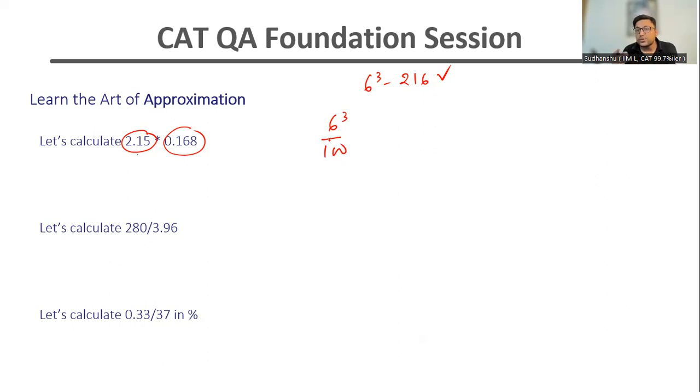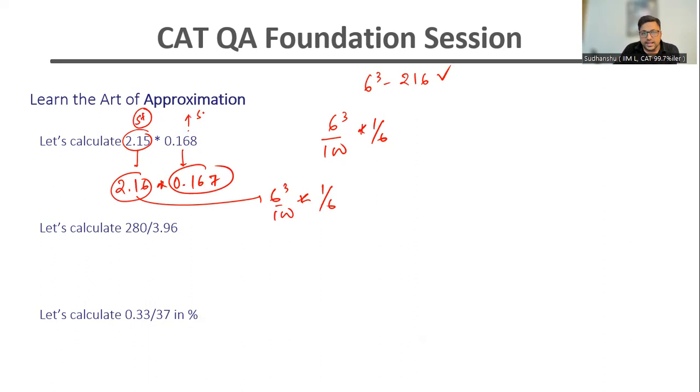And 0.168, if I increase this slightly to 0.167, this is certainly 1 by 6. So if I increase this by slightly positive and reduce this by slightly negative, then the answer should not vary much also, because we are doing this change in the last place, the second decimal after decimal. Therefore the impact should be lesser. Now this becomes 6 squared upon hundred, which is 0.36.